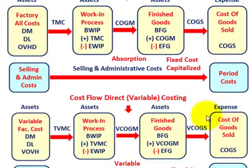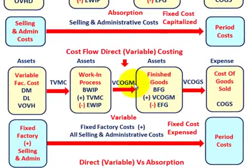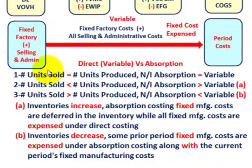The only difference between absorption and variable costing is that under absorption costing, fixed costs are capitalized in inventory and end up in cost of goods sold. Under variable costing, fixed costs are expensed immediately as period costs — they don't flow through inventory or cost of goods sold.